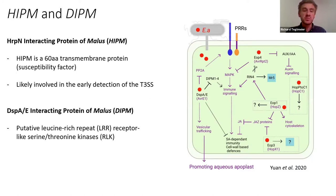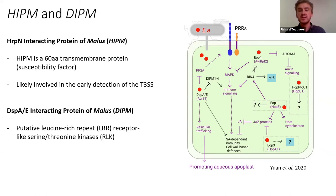Looking at my specific genes in apple, they are more disease-specific. You have HRPN interacting protein of Malus and DSPA/E interacting protein of Malus — HIPOM and DIPOM. Both are transmembrane proteins that interact with their respective Erwinia effector proteins. The main purpose of these transmembrane proteins is to capture early signals of extracellular molecular patterns of Erwinia to elicit an early defense response, while the effector protein tries to block and inhibit downstream pathways.